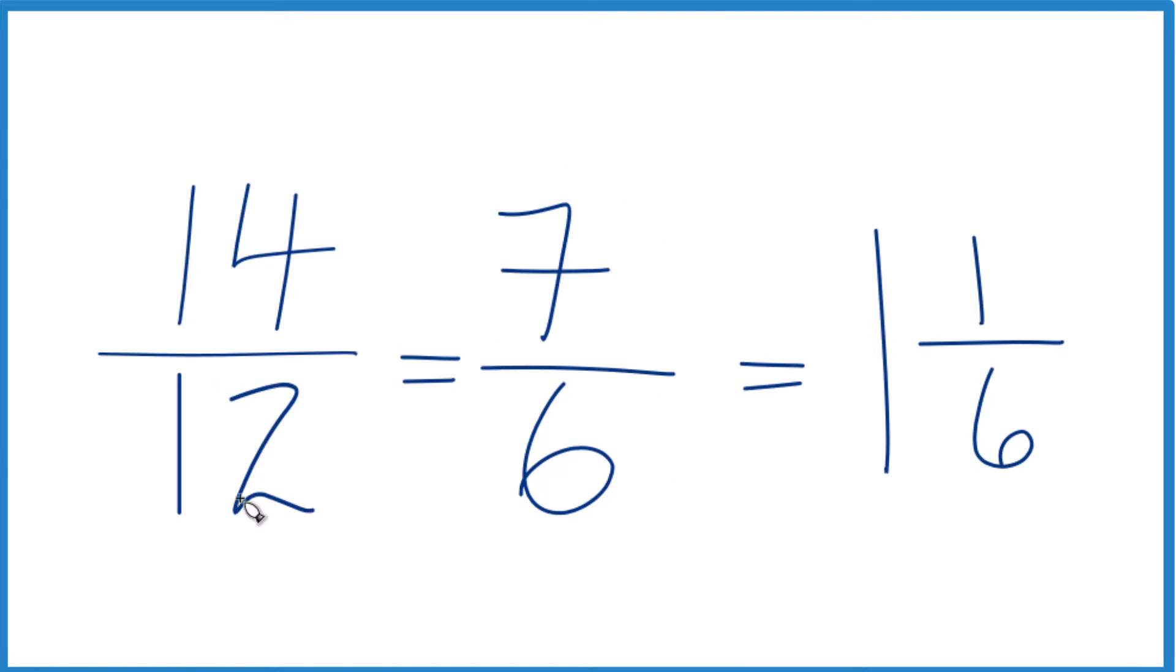So we've simplified 14/12 down to 7/6, and then we wrote that as a mixed number. And all of these are equal. Same value, just written different ways.